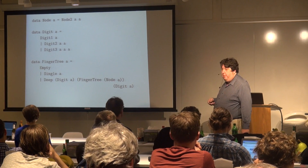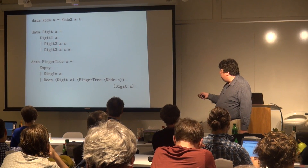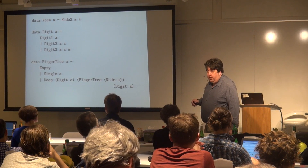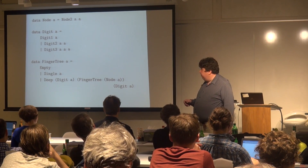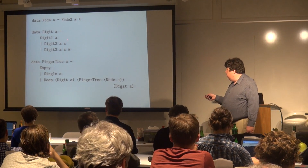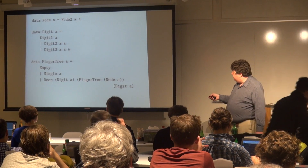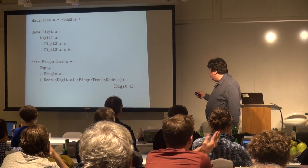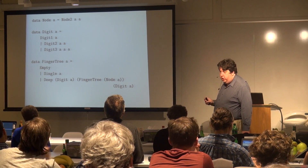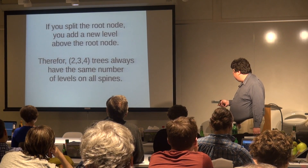We have a node A — still just a pair. We replace the list of A with what I call a digit, because there can only be one, two, or three cases, and I want exhaustiveness checking. Now we have three different possibilities: one child, two children, or three children. You can think of this as a two-three-four node with one child missing — and the missing child is the deeper tree.